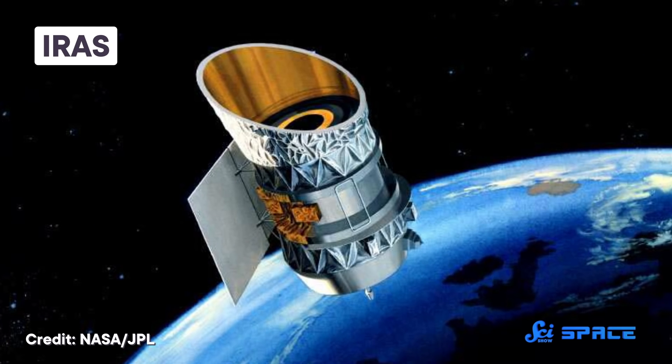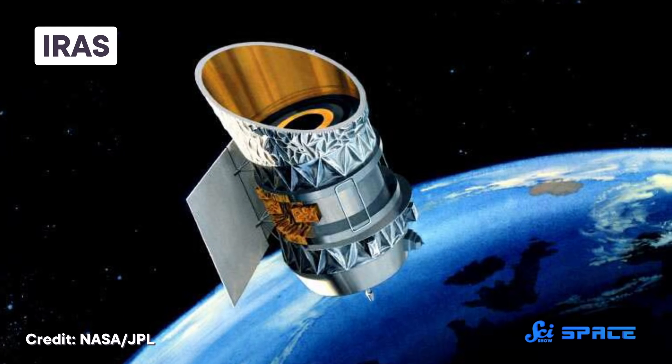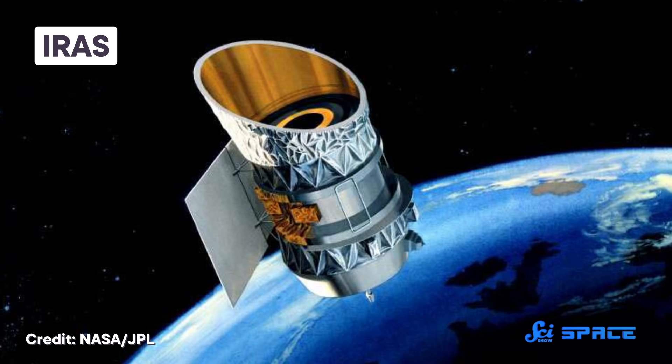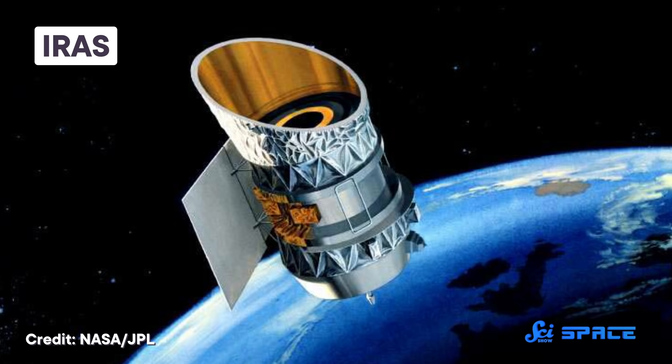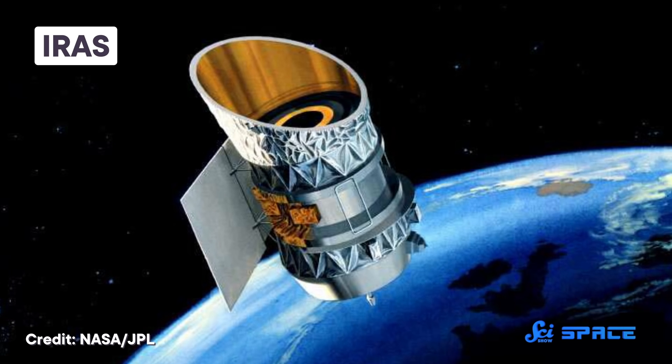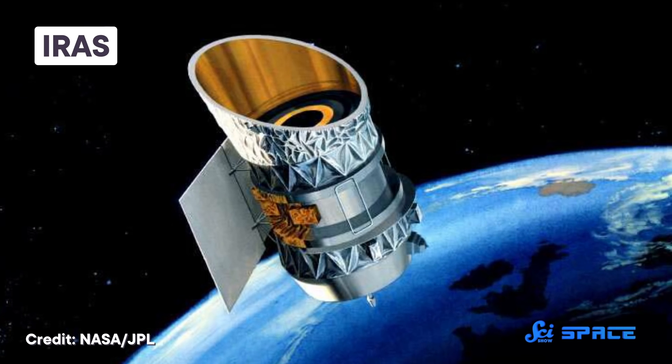So the United States, United Kingdom, and the Netherlands launched a groundbreaking telescope, the Infrared Astronomical Satellite, or IRAS, to support the IR part of the spectrum. And in just 10 months, it nearly doubled the total number of astronomical objects that have ever been discovered.